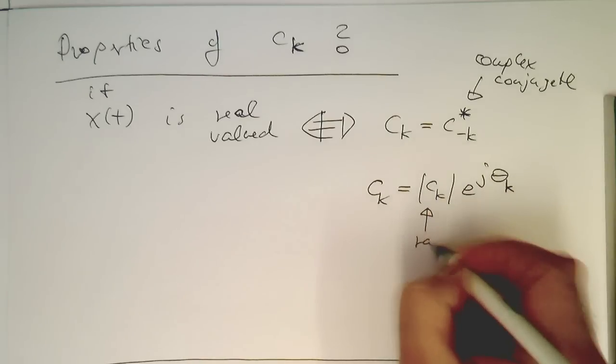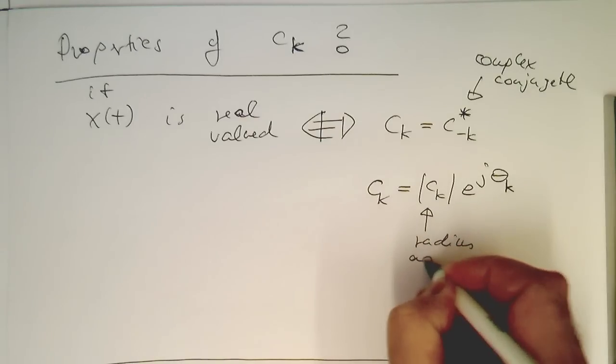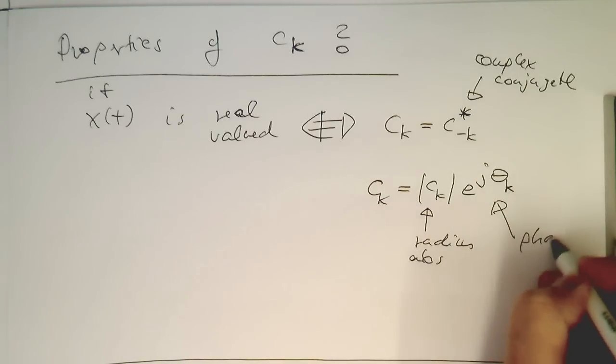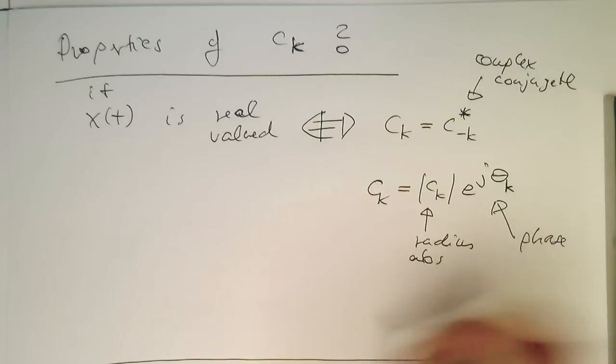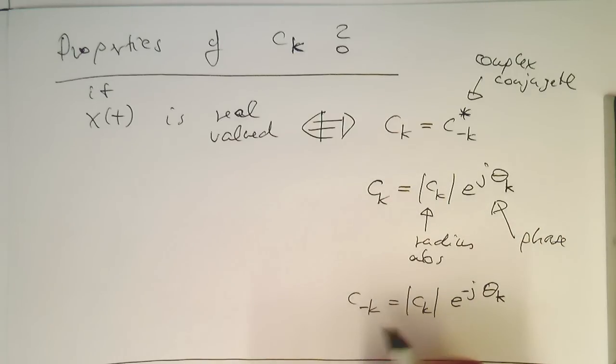So that's a radius or the absolute value. And this is our phase. And then our c minus k has the same amplitude, but we're just rotating the other way around. So e to the minus j φk. So we just go the other way around, and so we've got this relationship here.